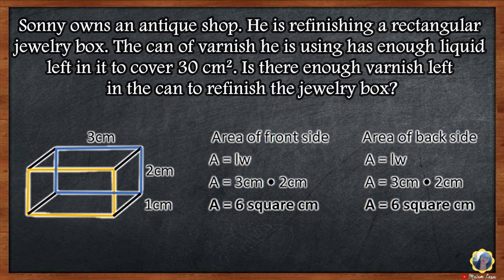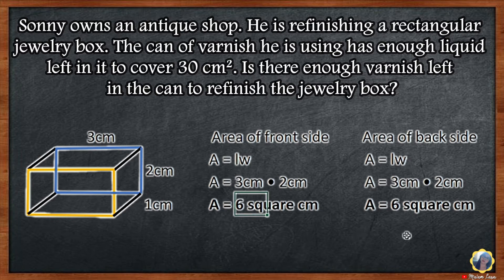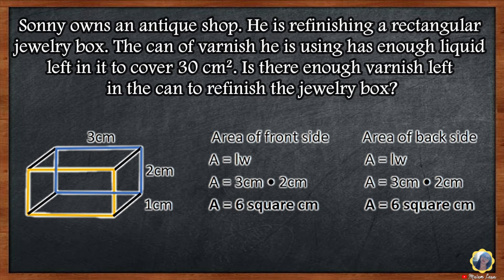Last is the area for the front and back side. Same formula, length times width. 3 cm times 2 cm is equal to 6 square centimeters. Since front and back are parallel, the same answer applies to both.